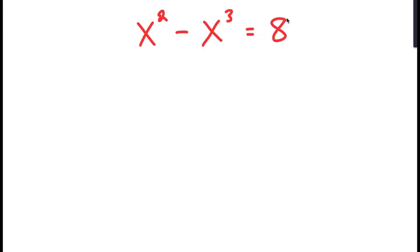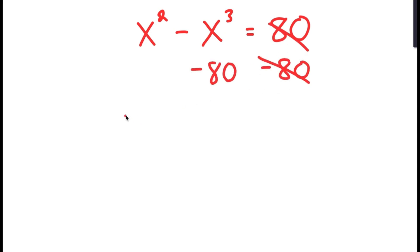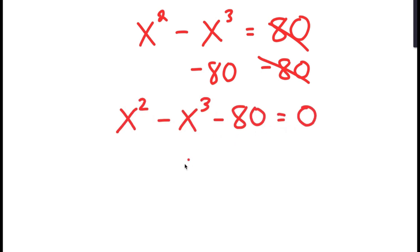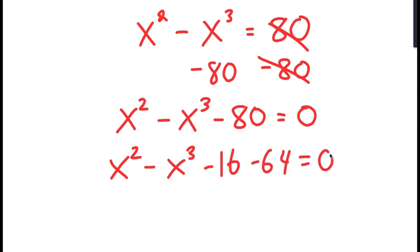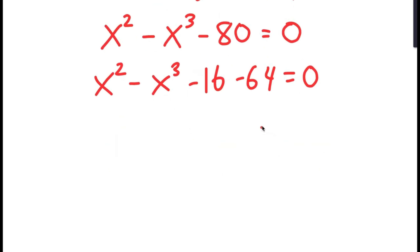Now I'm going to solve the equation x to the power of 2 minus x to the power of 3 is equal to 80. To solve this, I'll start by subtracting 80 on both sides, so I get x squared minus x cubed minus 80 equals 0. From here, I'm going to replace negative 80 with negative 16 minus 64.